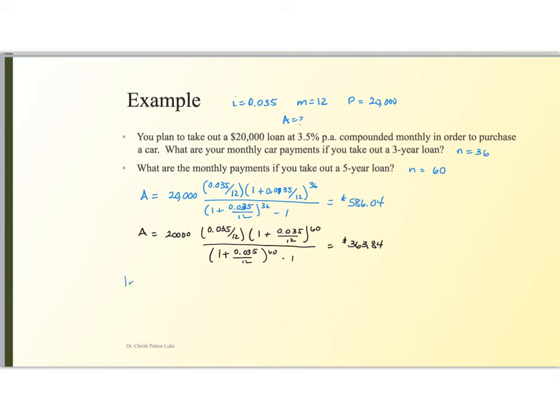So how much interest is paid? Using the 36-month plan, the amount I pay is 36 times 586.04. And the amount that was my principal value is $20,000. So I'll subtract that off. And what I find is that $1,097.44 went to interest. Using the 60-month plan, 60 payments at $363.84 minus that $20,000 purchase price, my interest is $1,830.40.